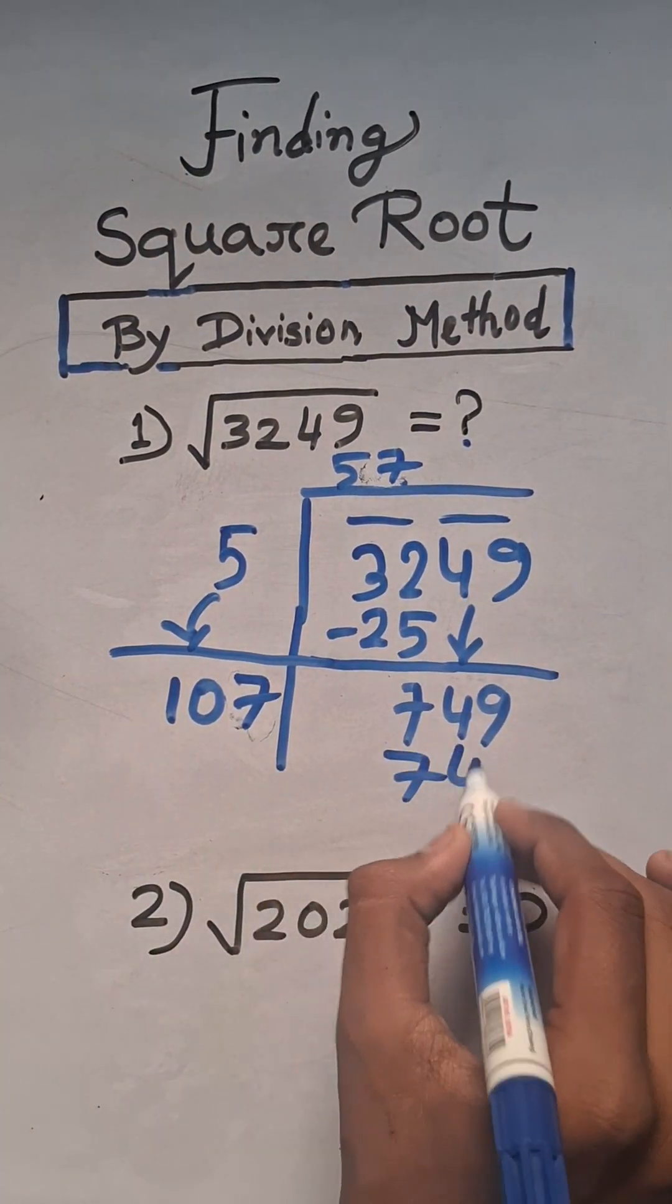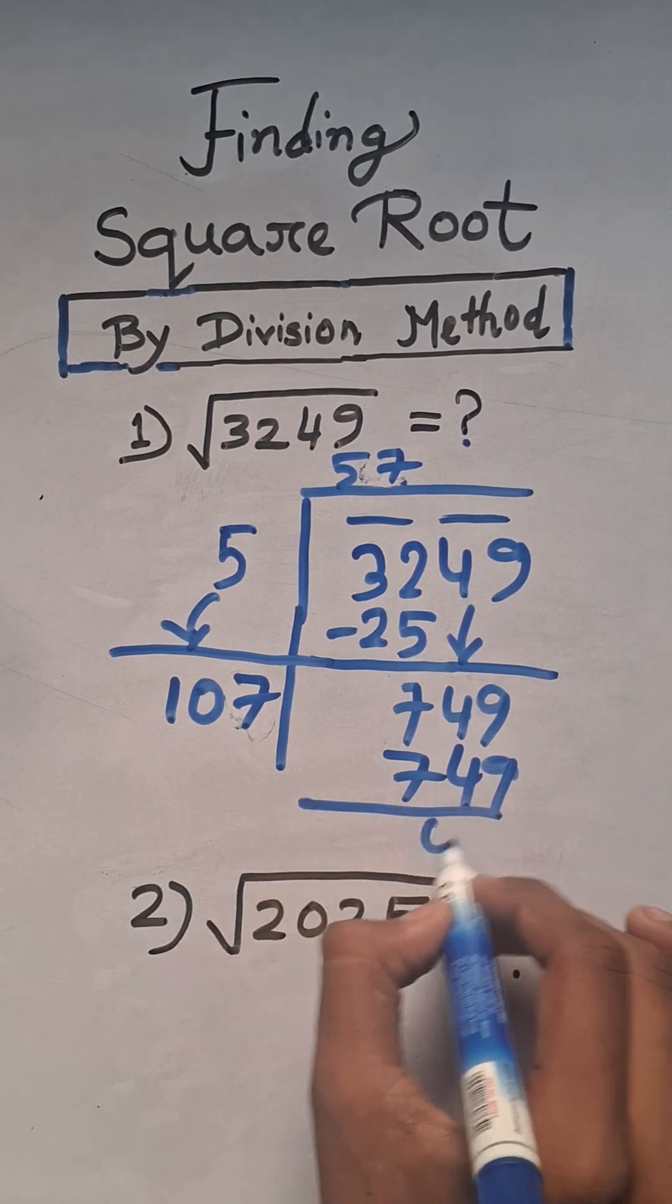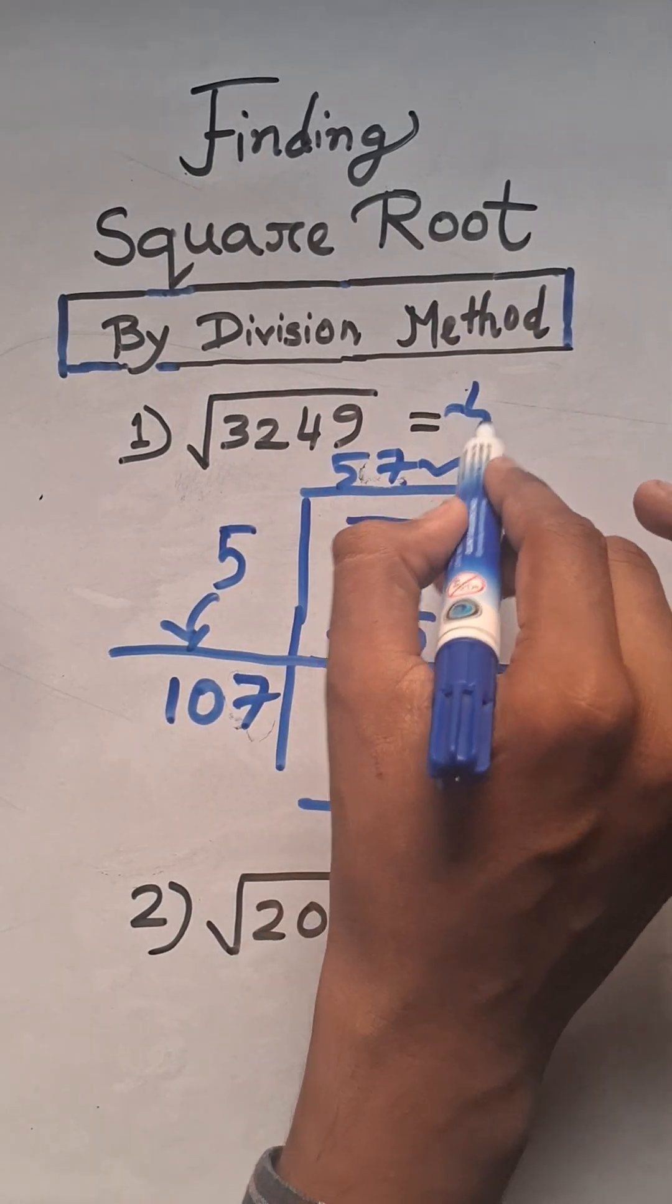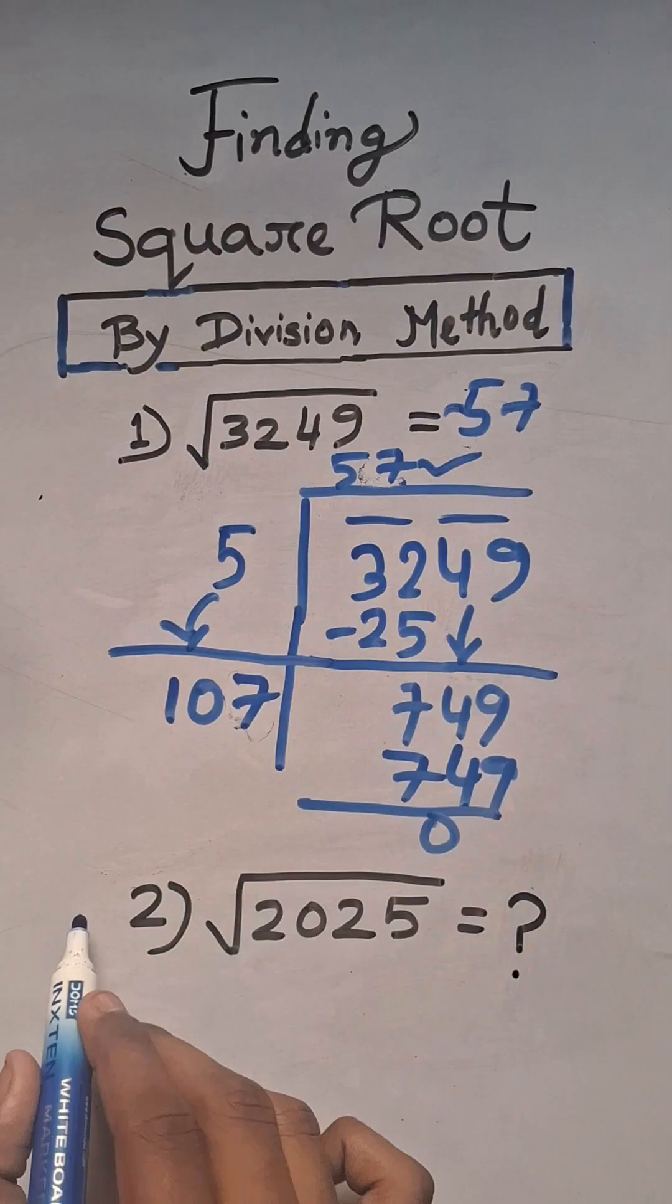Therefore 749 minus 749 equals 0. So the final answer is 57. Now you have to comment the answer for square root of 2025.